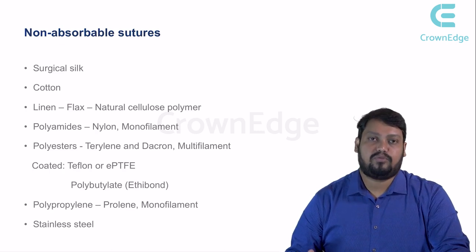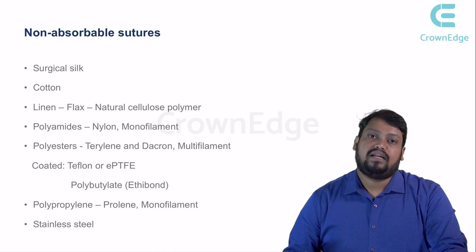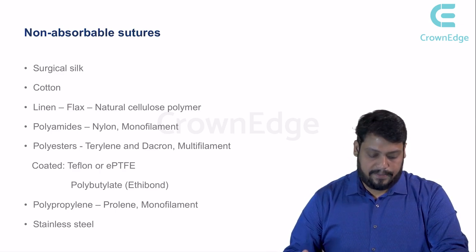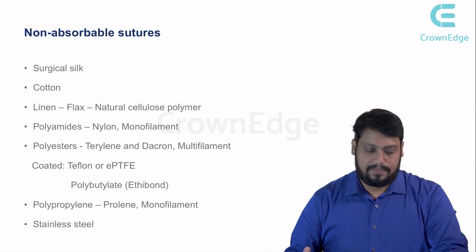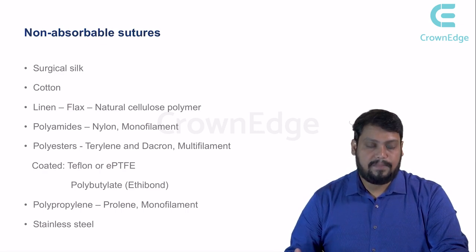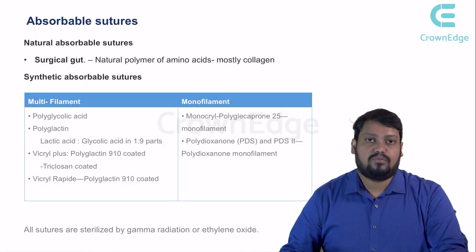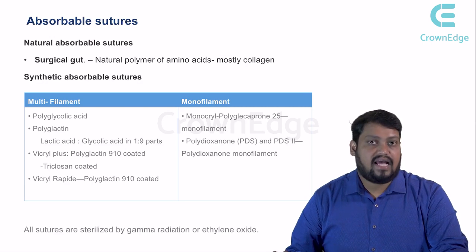Next is polypropylene, under which we have prolene, a monofilament. These are good for deeper and heavier tissues in suturing cases. The last non-absorbable type is stainless steel, which falls under the metallic category. So those are the types of non-absorbable sutures.